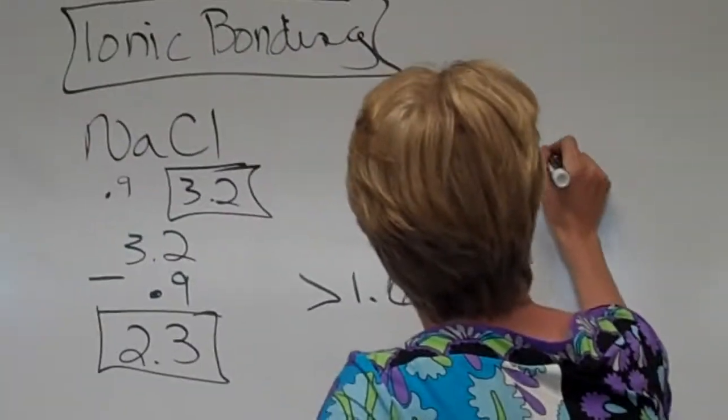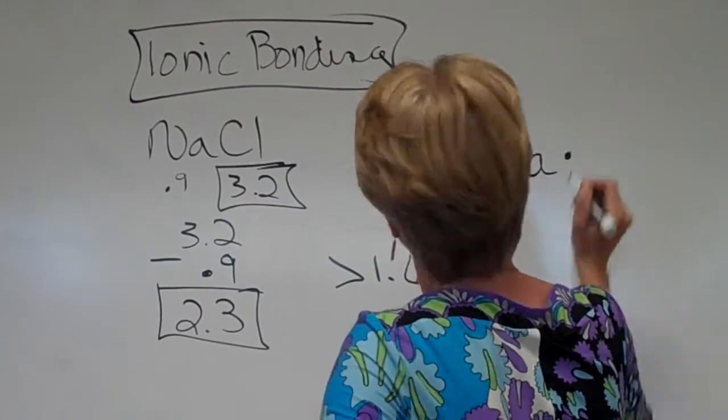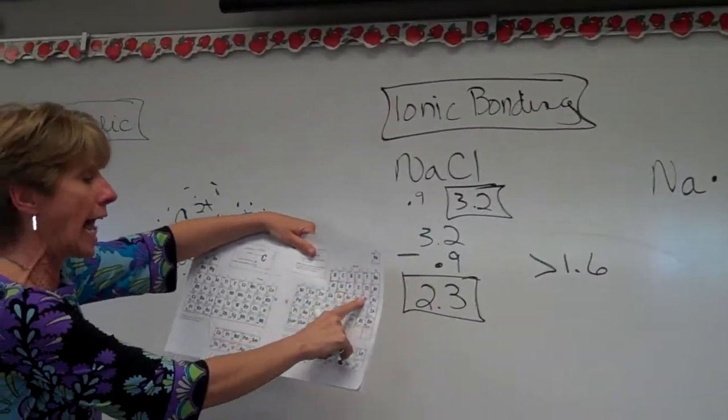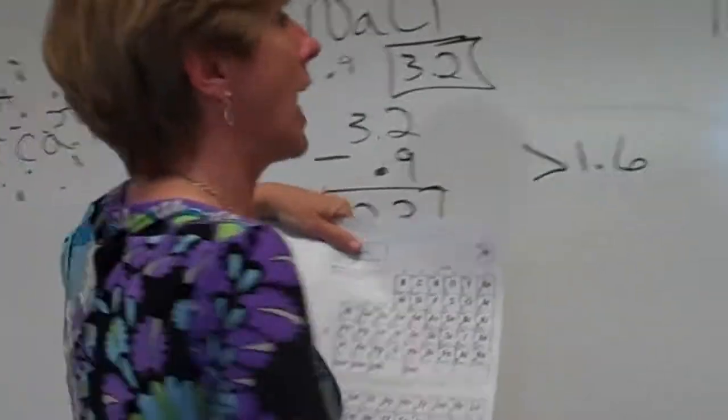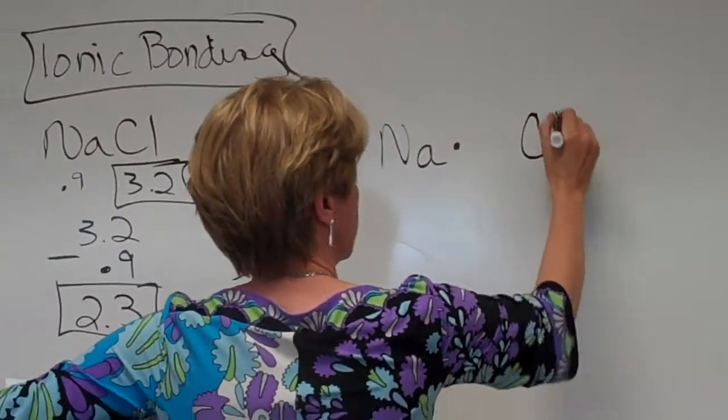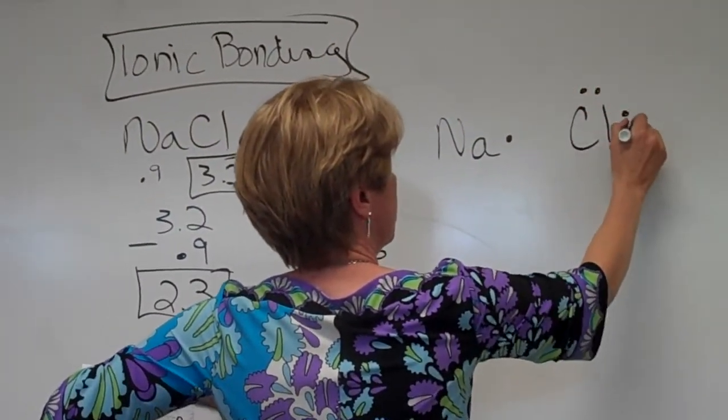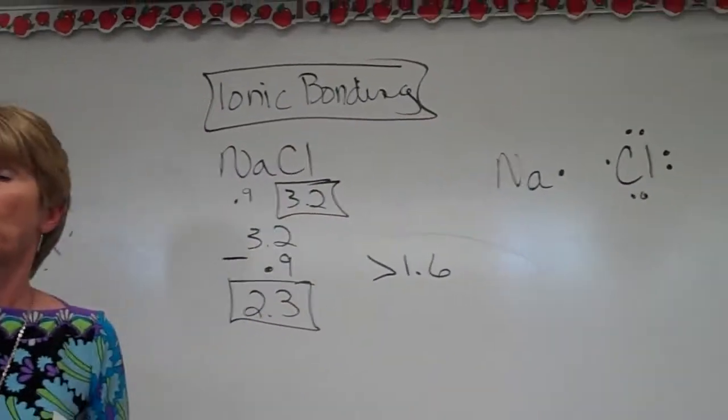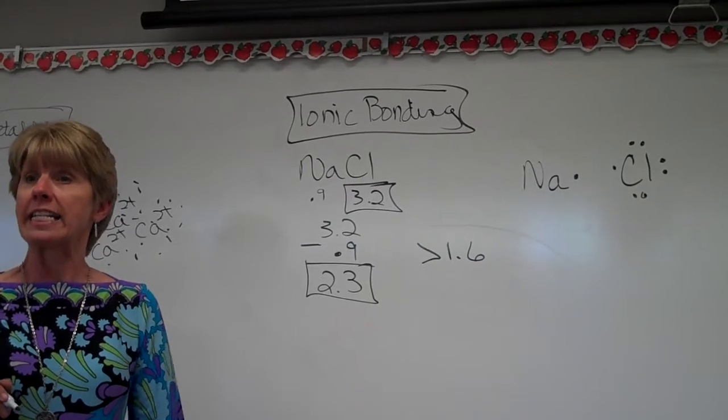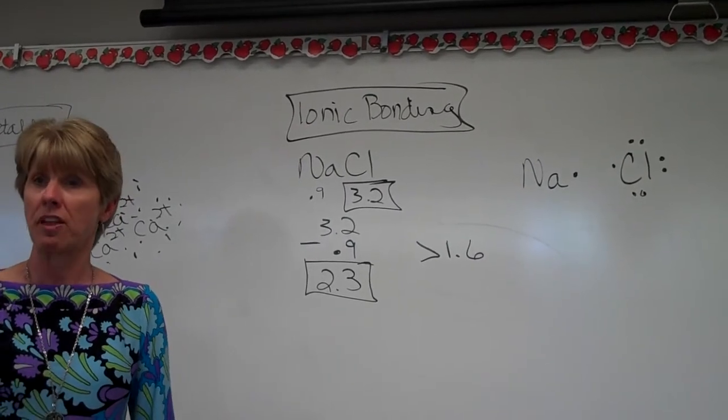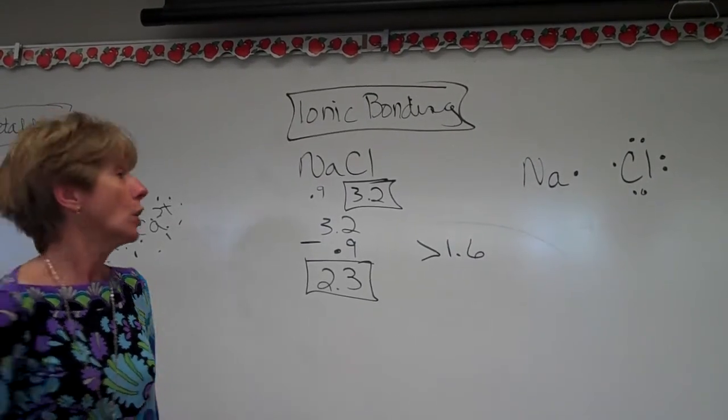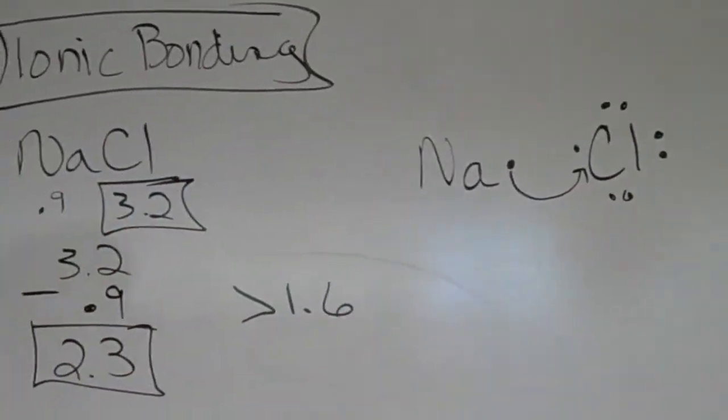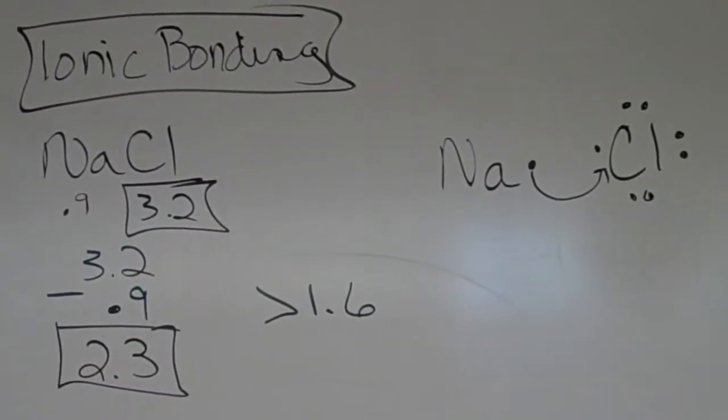So let's do it. Sodium has 1 valence electron. Chlorine is a halogen. Chlorine has 7 valence electrons. 1, 2, 3, 4, 5, 6, 7. Now we know that all atoms want to have 8 valence electrons, and that's why they form chemical bonds. So sodium is going to transfer its valence electron to chlorine.